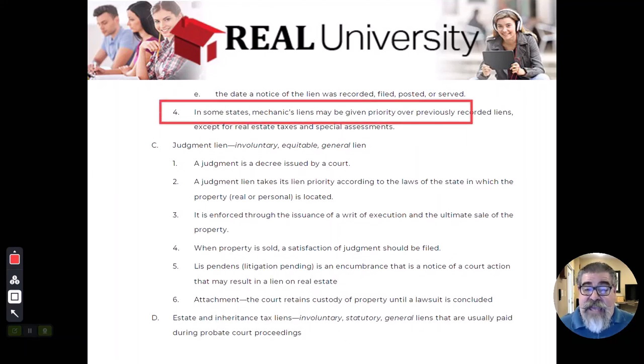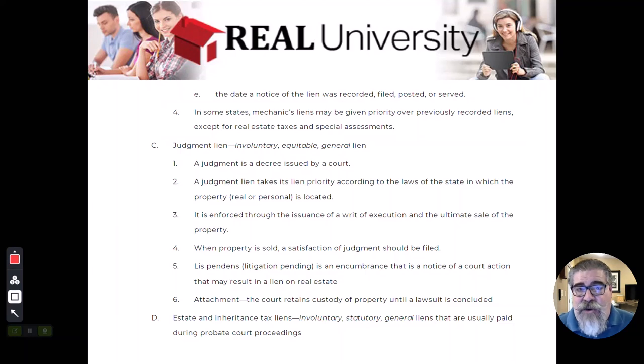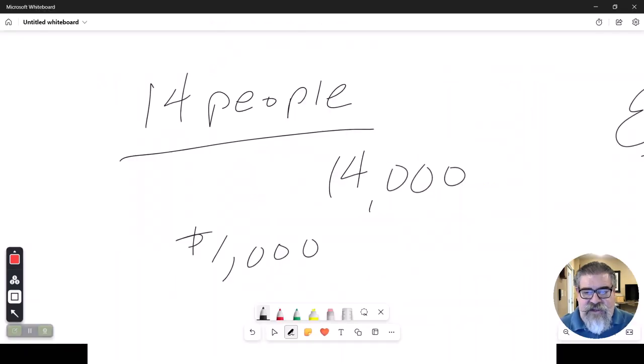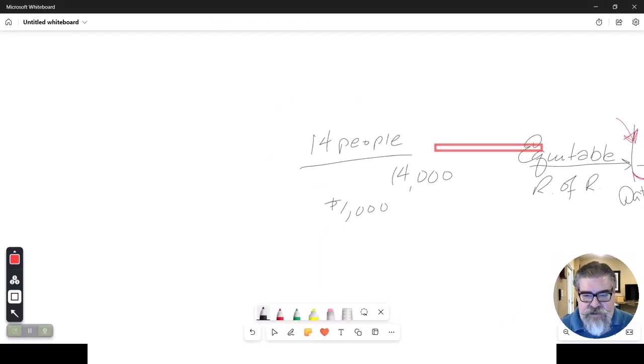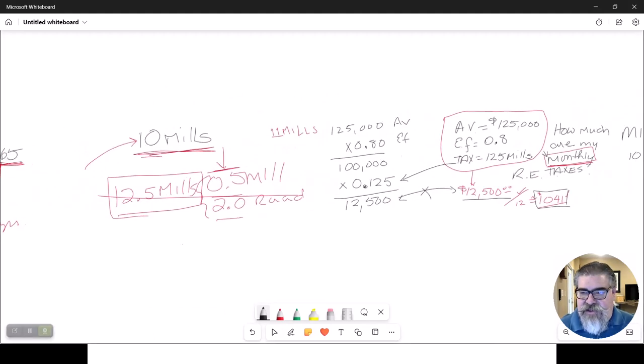In some states, Indiana is not one of them. Mechanics liens give priority over other liens. I don't know any of the states that that's actually true. The second or the last one that we want to talk about is this judgment.